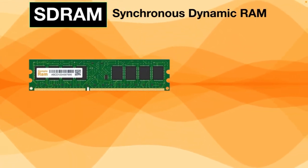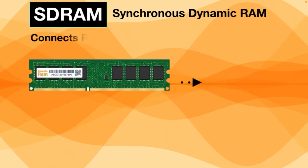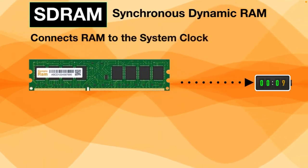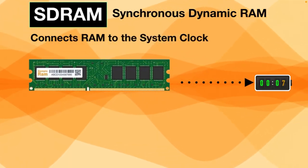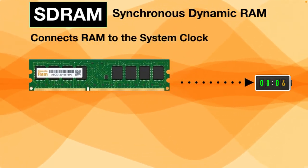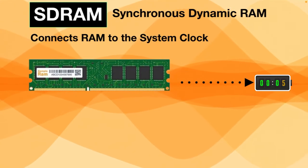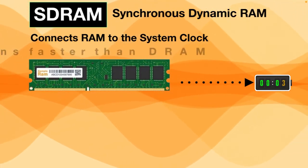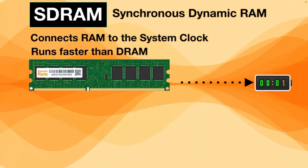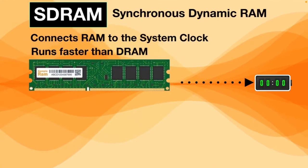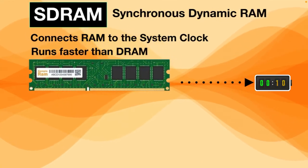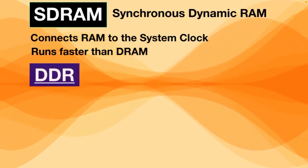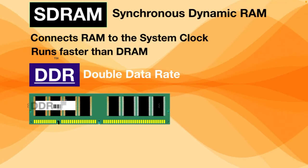SDRAM connects RAM to the system clock, syncing RAM to the system clock brings memory up to speed. That's why SDRAM runs faster than DRAM. Today, the most common type of RAM is DDR — Double Data Rate — which is a newer technology.